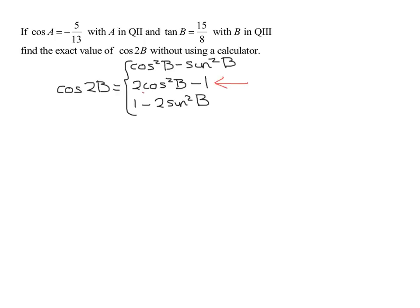So that means I need to find the cosine of B to be able to use this formula. Now, if we were given the sine of B up here, then I would use this formula. If we were given the cosine of B here, I would use this one. But since we're given the tangent of B, it doesn't make any difference.